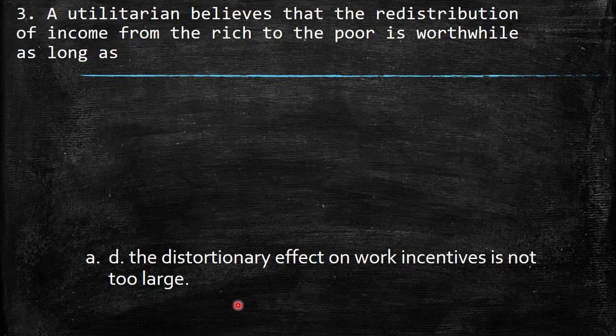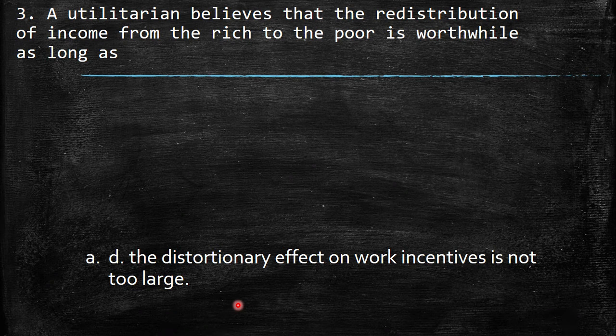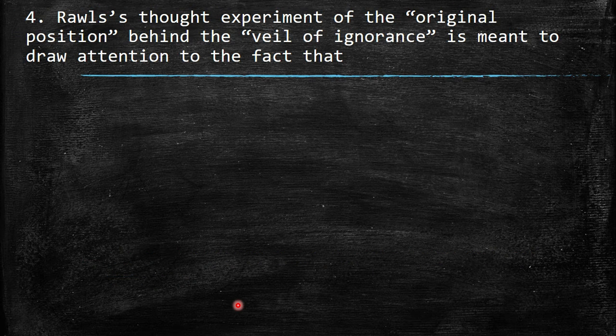The answer is that redistribution is worthwhile as long as the distortionary effect on work incentives is not too large — meaning I can still compensate the marginal effect on those I'm taxing, while putting those resources toward those in poverty and need.